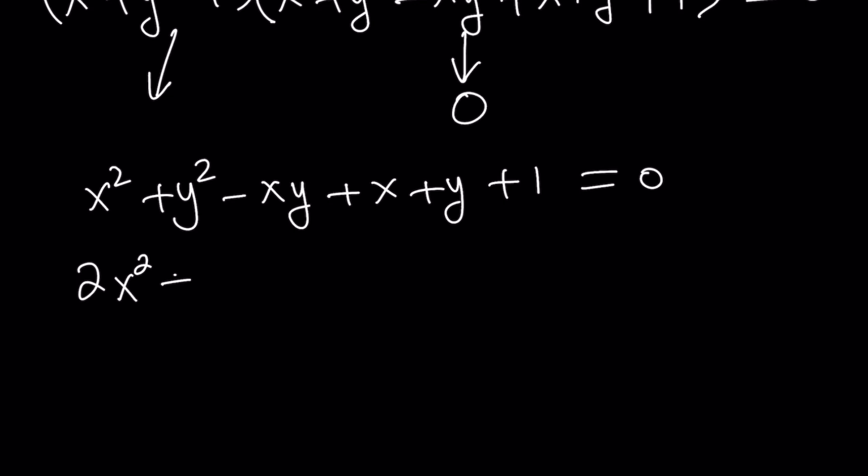Multiply everything by 2. Then split it up. For example, I can pick x squared plus y squared minus 2xy from here, which is a perfect square.